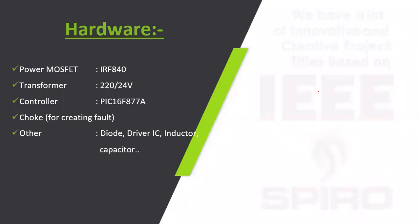The minimum hardware requirements include MOSFET, transformer, and PIC microcontroller. A clock is used for creating the fault, to differentiate the rated voltage and the sag voltage. Other active and passive components are also used. Thank you.